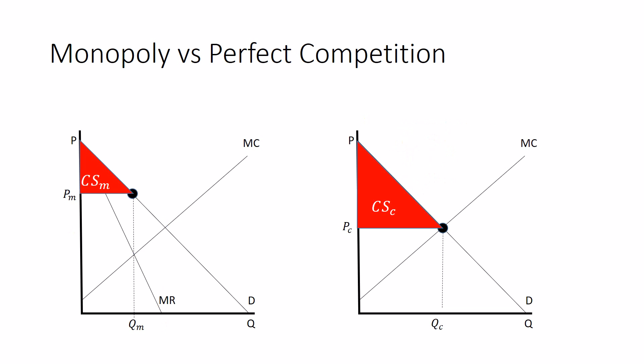Under Perfect Competition, producer surplus, everything below price above marginal cost is all of this. Under monopoly, it's everything below price above marginal cost up to the quantity sold, which is this.